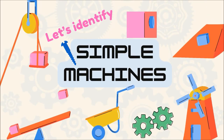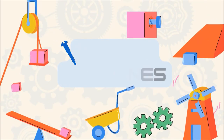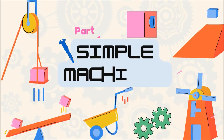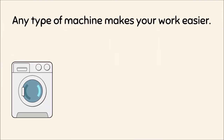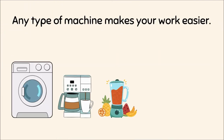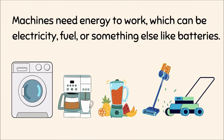Let's identify simple machines — simple machines part one. What is a machine? Any type of machine makes your work easier. Machines need energy to work, which can be electricity, fuel, or something else like batteries.